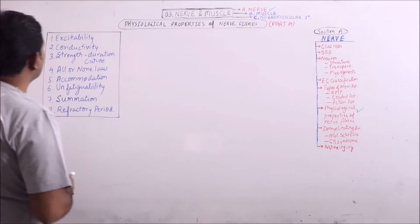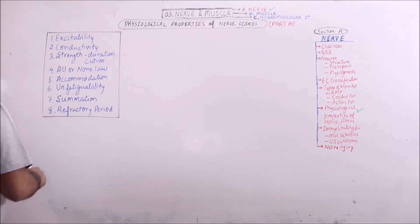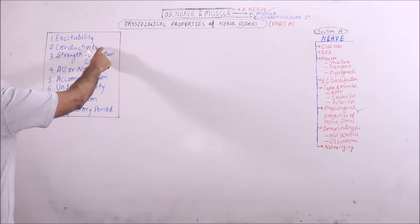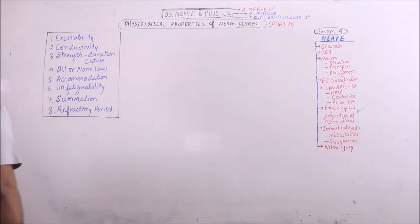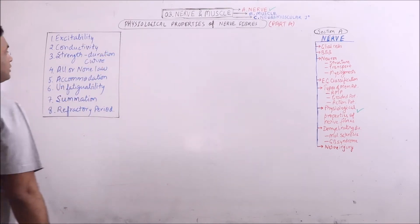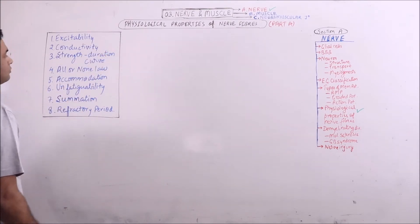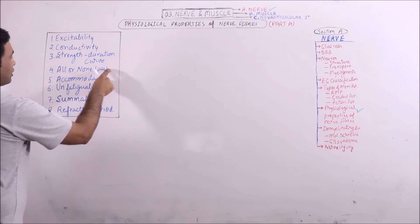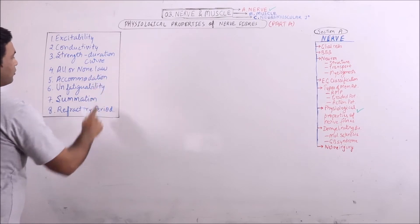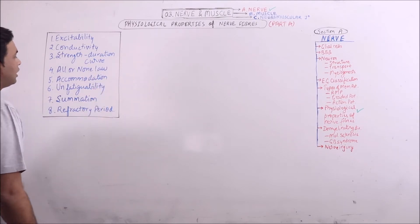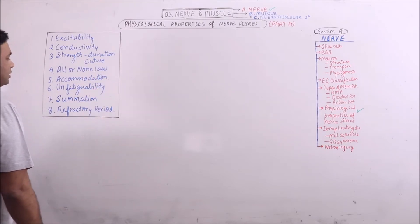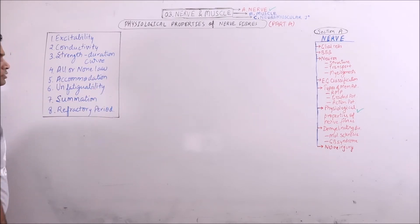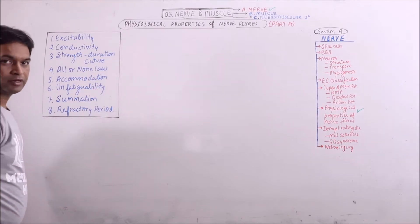The outline of physiological properties are: excitability, conductivity, strength-duration curve, all or none law, accommodation, unfatigability, summation, and refractory period.